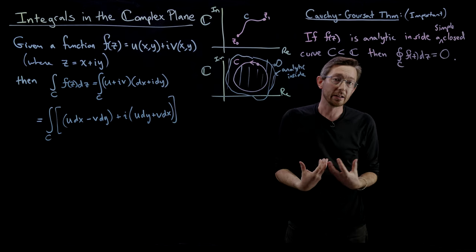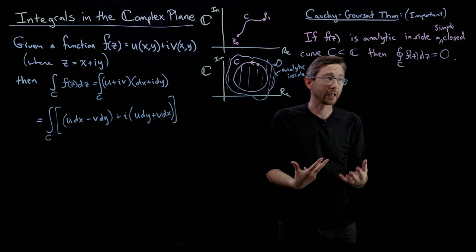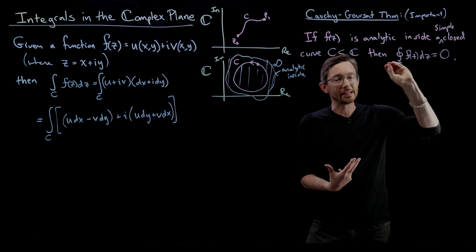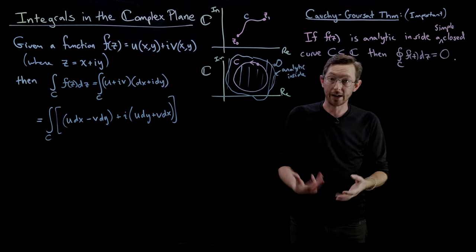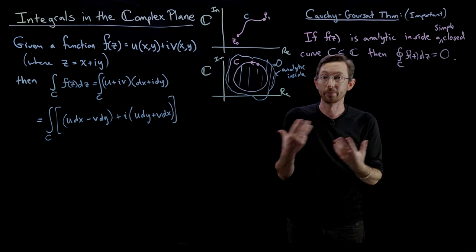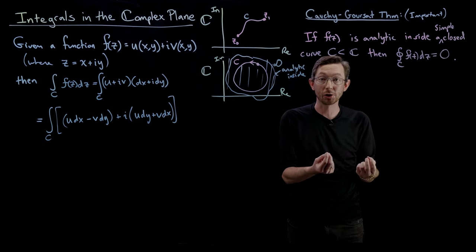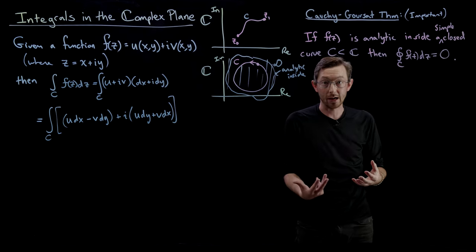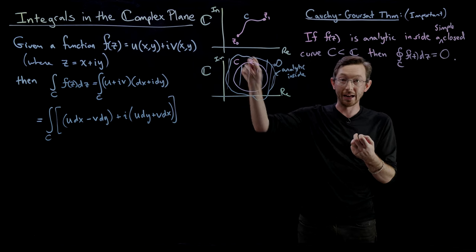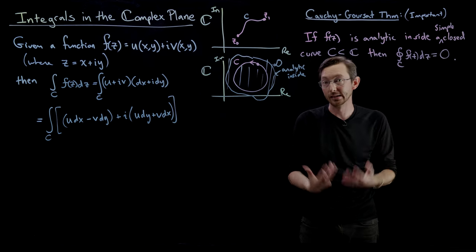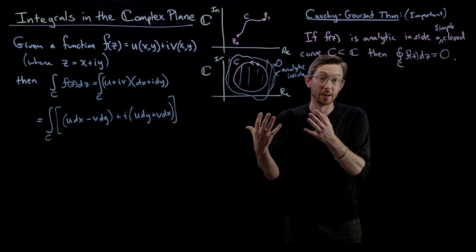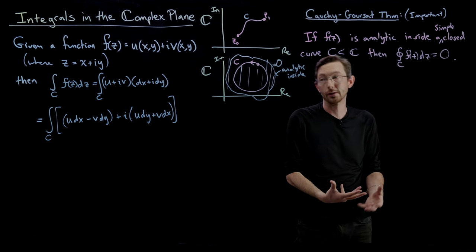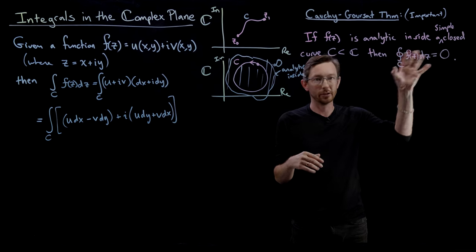Intuitively, if you like physics or engineering, this feels a lot like a conservative vector field — like a potential function. If I look at gravitational potential, hike up a mountain and hike back down with no friction or losses, the total gain in energy around that closed loop is zero because it's a potential function — the vector field is the gradient of a potential. So we have this conservative property that the integral equals zero.